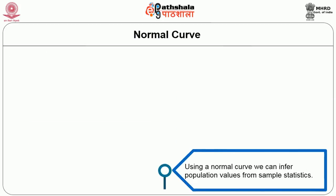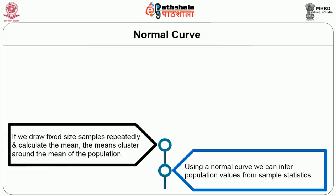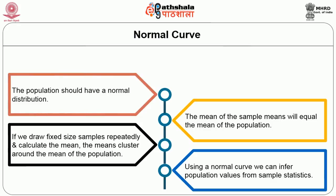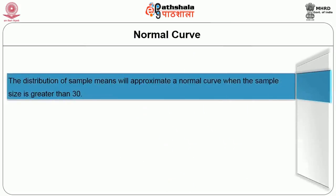Using a normal curve, we can infer population values from sample statistics. If we draw fixed-size samples repeatedly and calculate the mean, the means cluster around the mean of the population. The mean of the sample means will equal the mean of the population. The important point to remember is that the population should have a normal distribution. However, the population does not always have a normal distribution. According to the law of large numbers, the distribution of sample means will approximate a normal curve when the sample size is greater than 30.